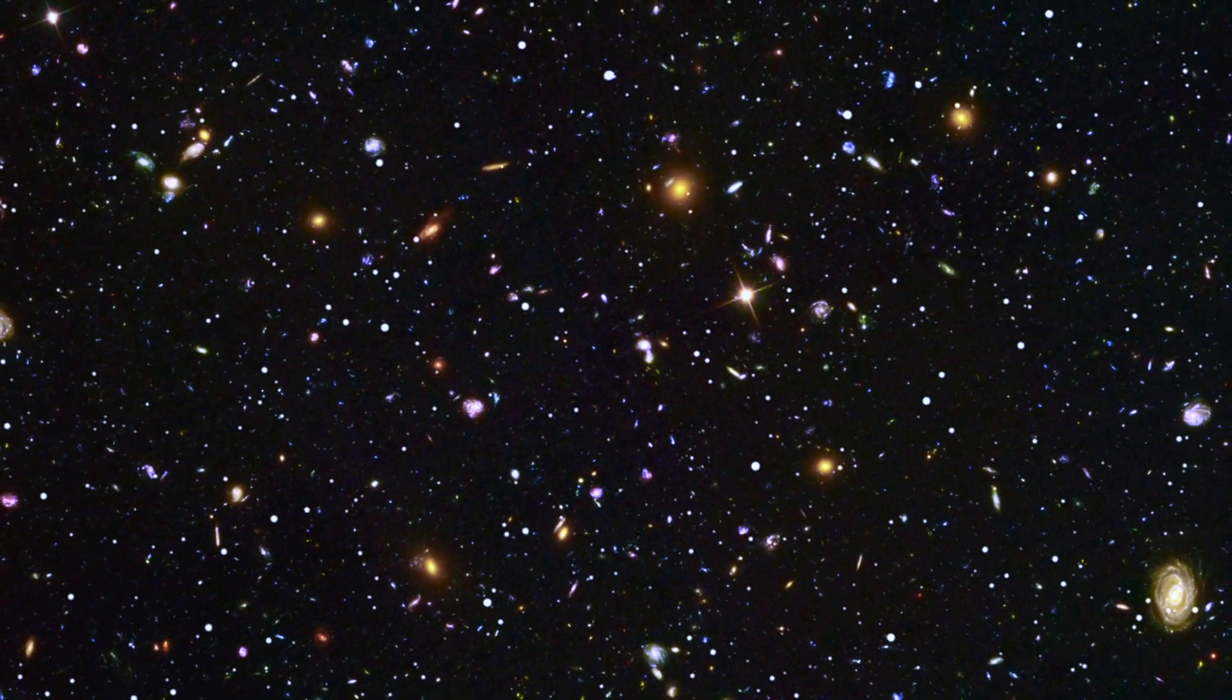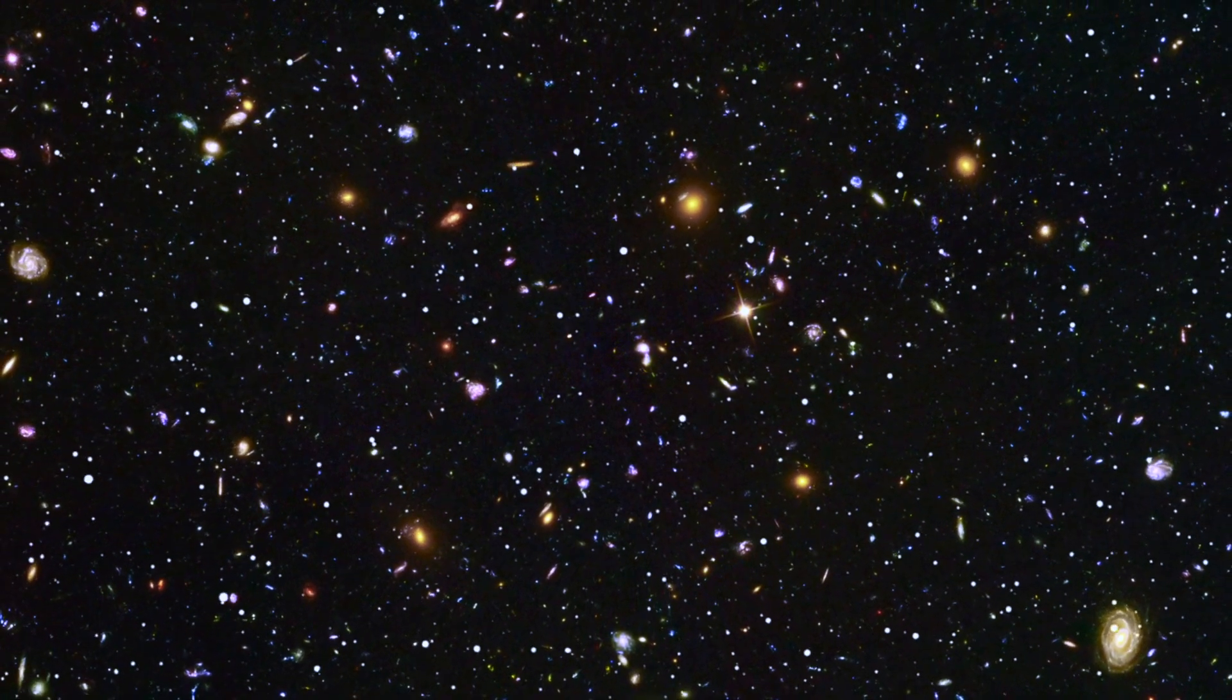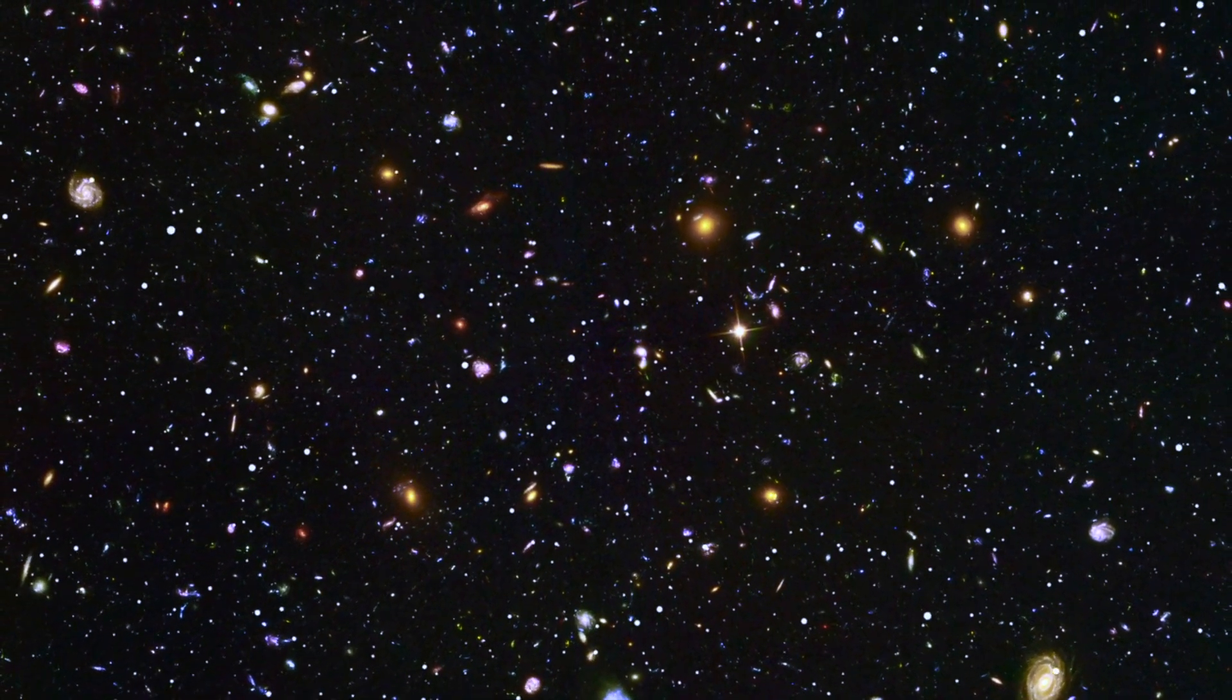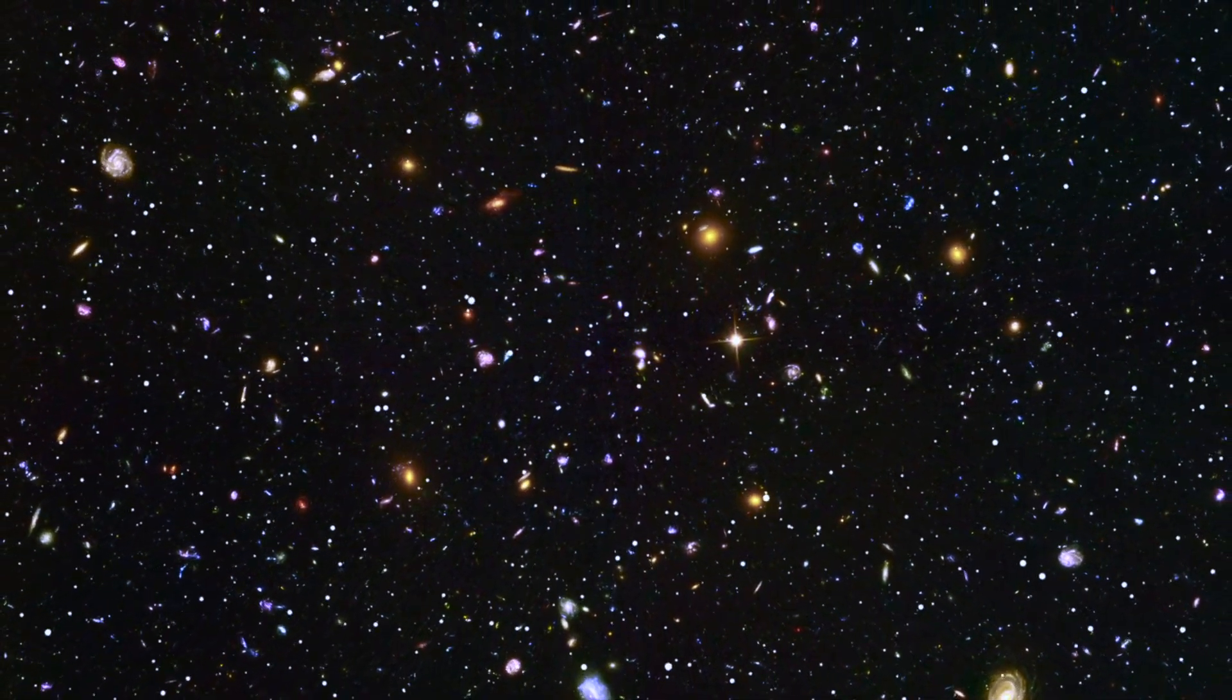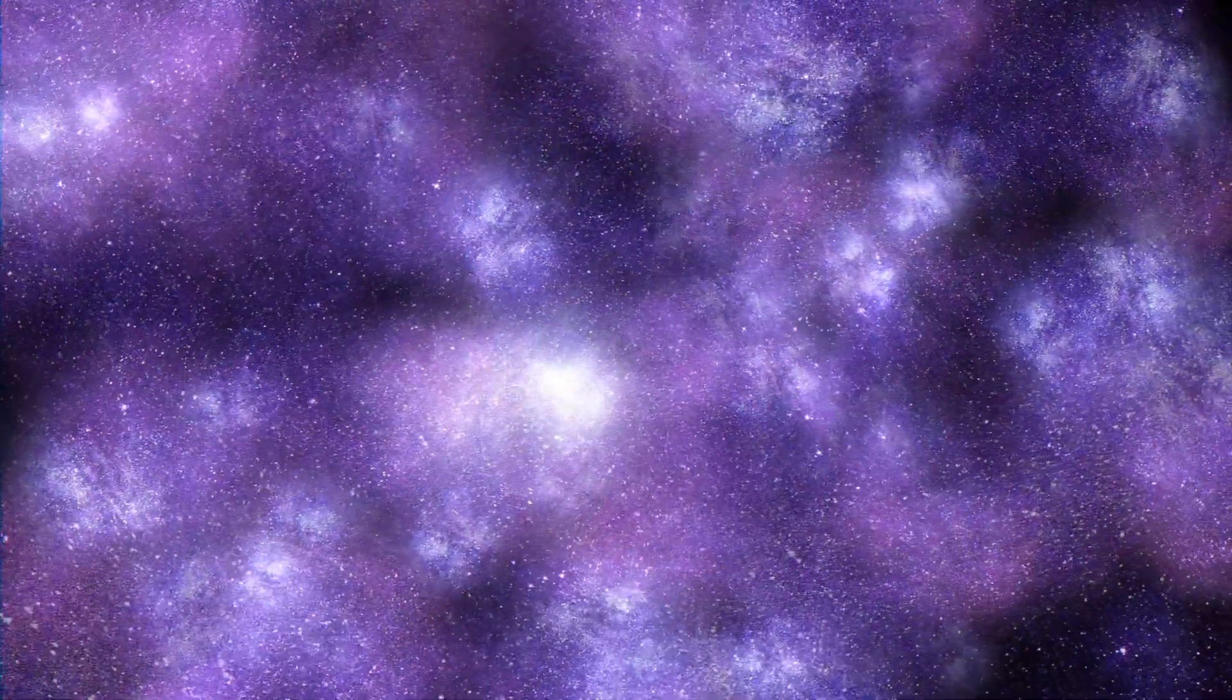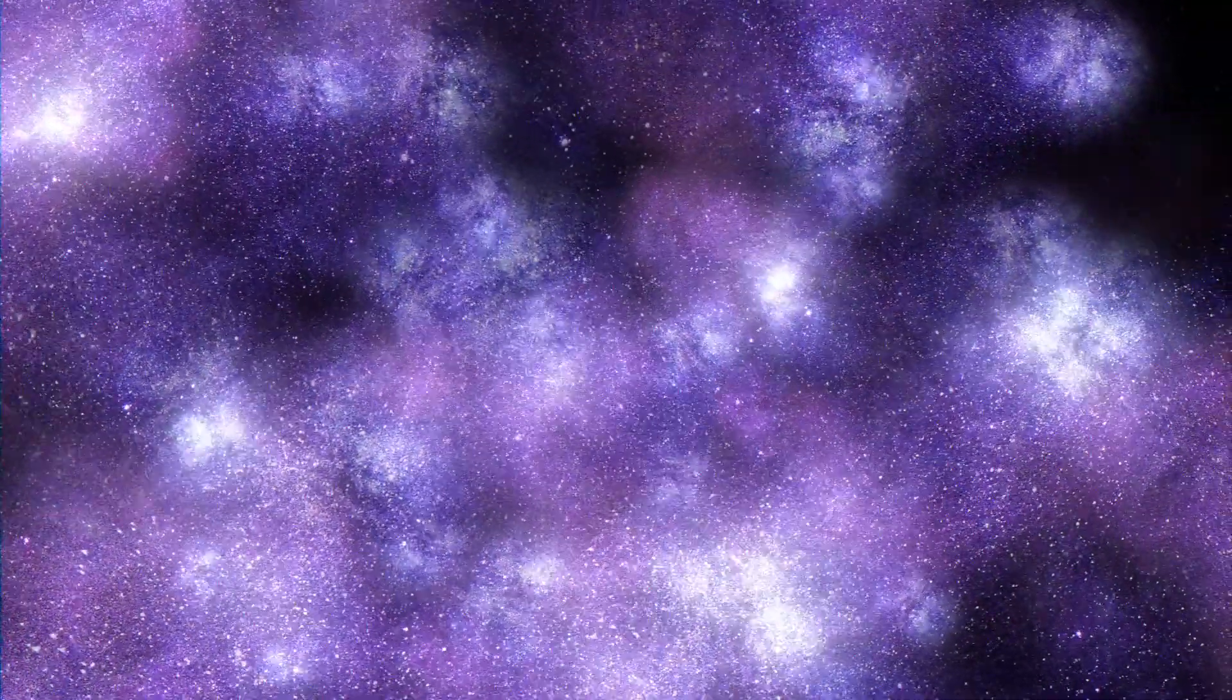Because light takes time to travel, this photograph offers a glimpse of galaxies as they appeared up to 13 billion years ago, allowing us to look back in time. The Hubble Deep Field also uncovered young, distant galaxies in the early stages of their formation, and they appeared irregular and chaotic.